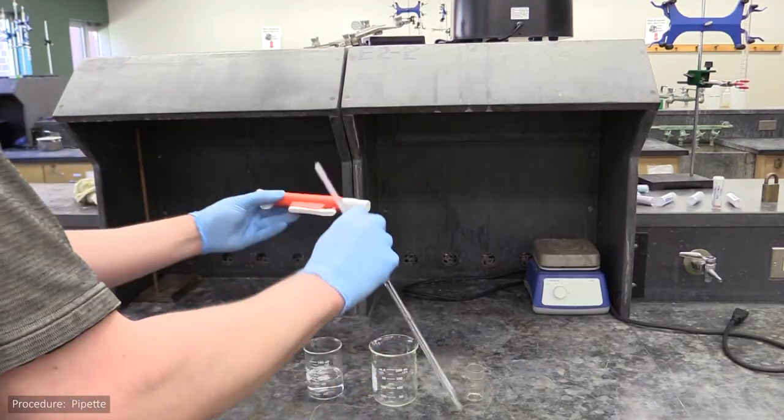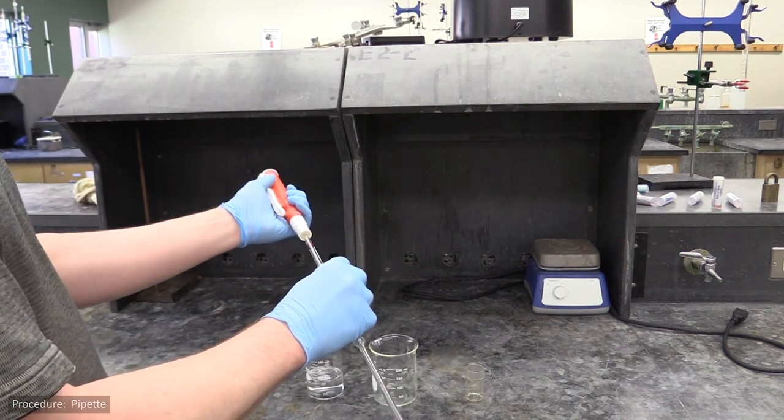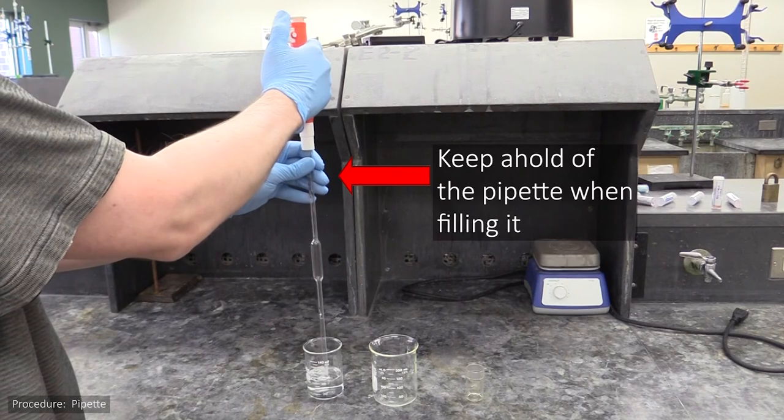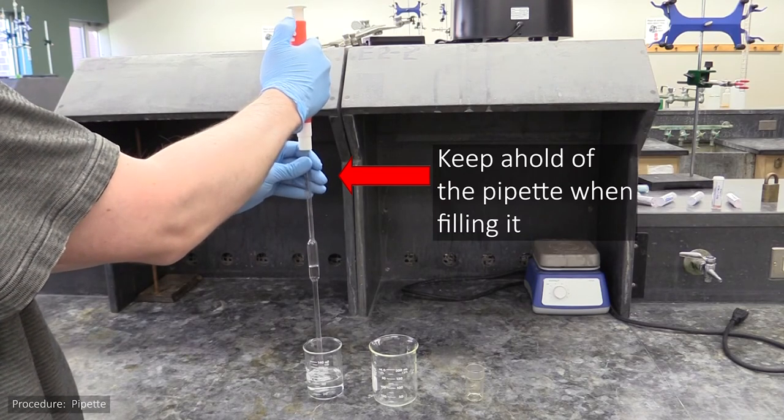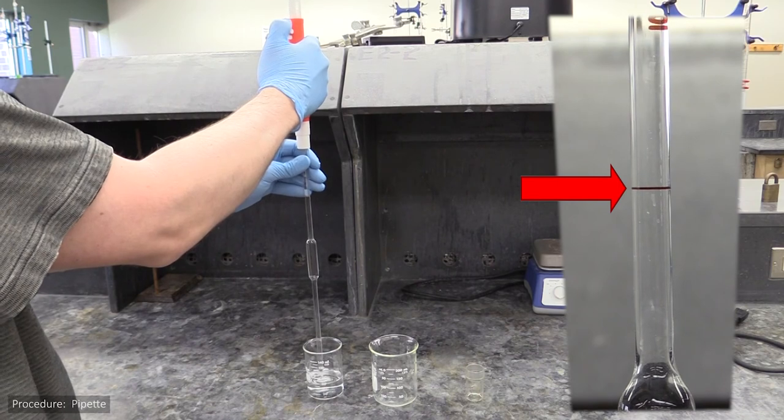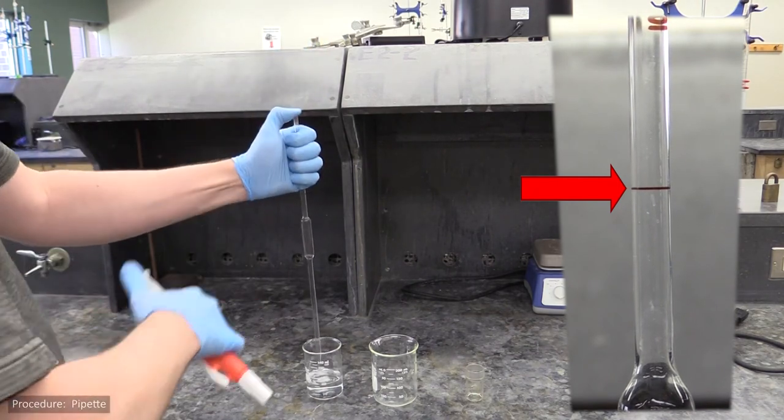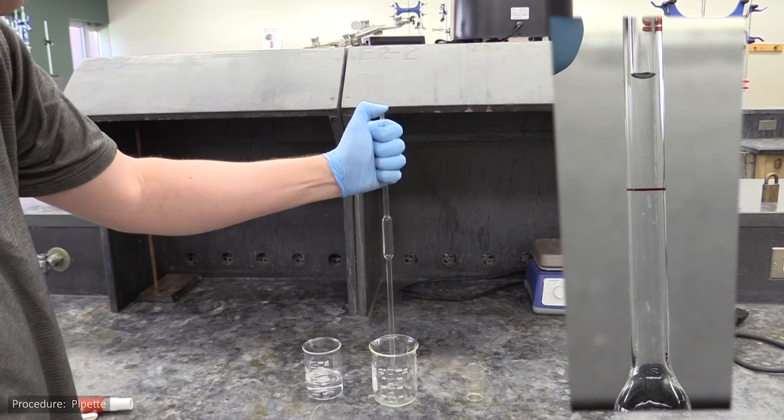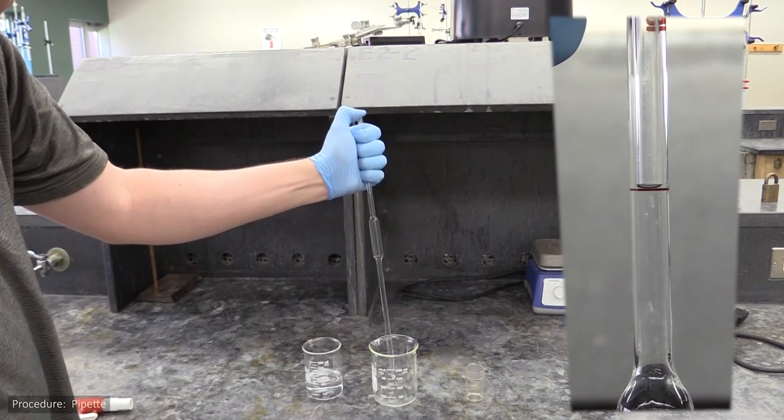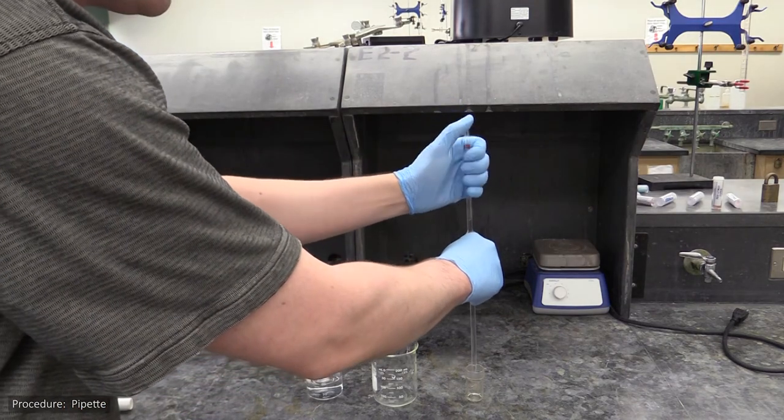As with the burette, you'll use your pipette to dispense water into a weighing bottle and weigh the bottle before and after. To use your pipette, you first use a pump to draw water up to just past the pipette's index line. You then take the pump off and use your thumb or finger to hold the liquid up. Then let it drain down to the line and let it gravity drain into your weigh bottle.